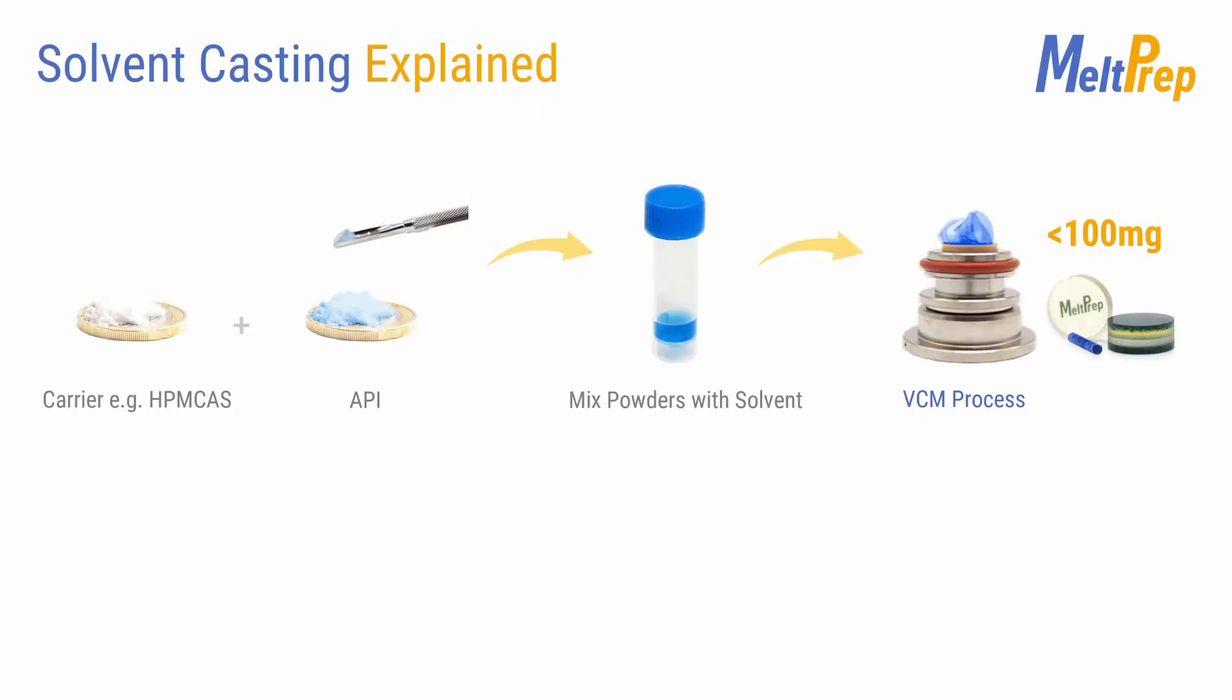If larger quantities of the formulation are needed for dissolution testing as the project progresses, cryogenic milling can be a valuable solution. It allows for processing up to 5 grams with even the smallest cryogenic mills.